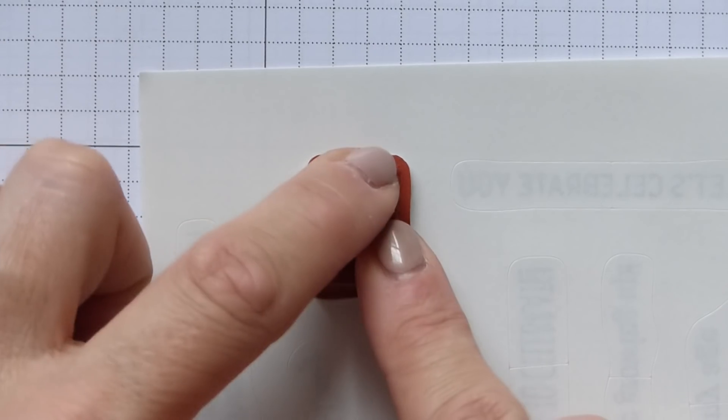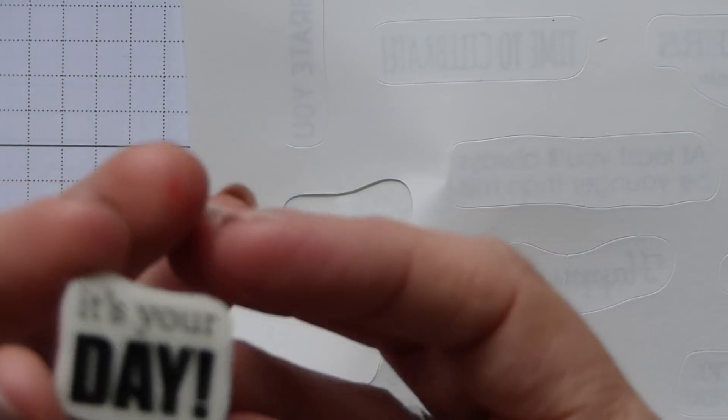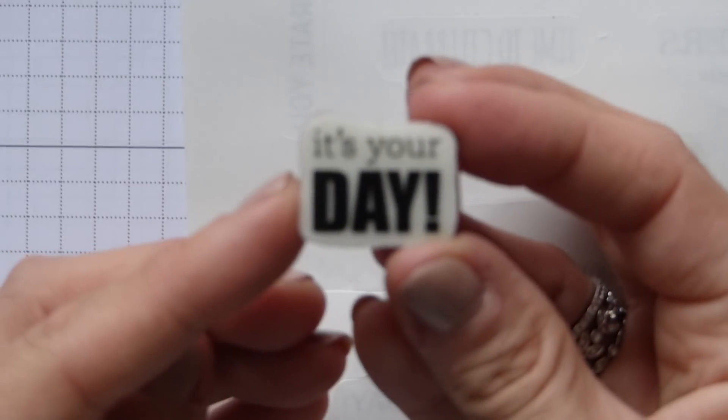Give it a little press, but then when you come to take it off you need to peel from the side. Okay so you peel it off and there is your stamp.